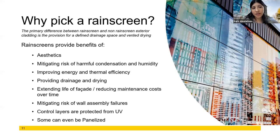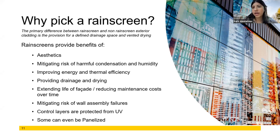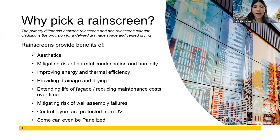So why pick a rain screen? First of all, aesthetics — you're not at the mercy of your substrate anymore. You can create unique shapes and profiles to the building, get a perfectly plain wall where there was none, and pick unique shapes and graphics that you can't necessarily do with a direct applied system. You mitigate the risk of harmful condensation and humidity, improve energy and thermal efficiency, provide drainage and drying, extend the life of the facade, and mitigate the risk of wall assembly failures. These are all functions of that air gap.